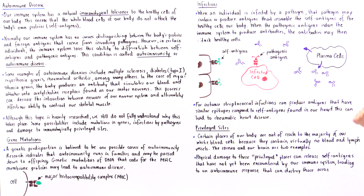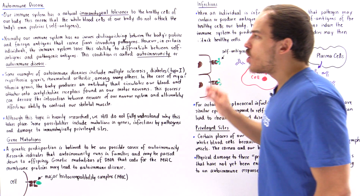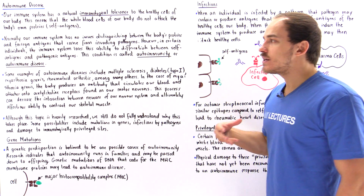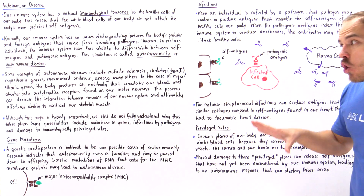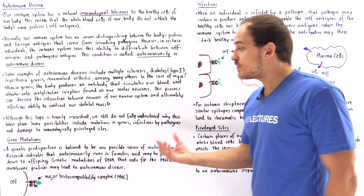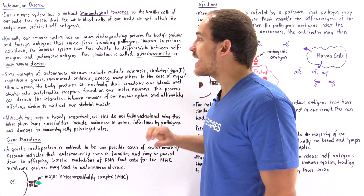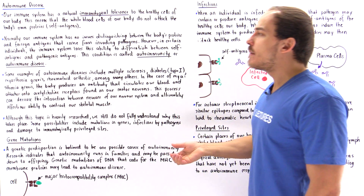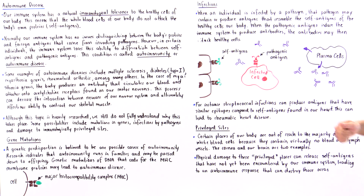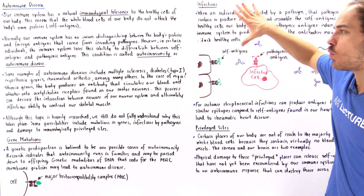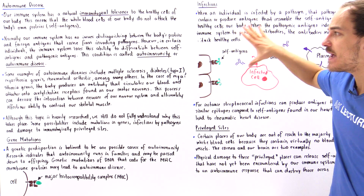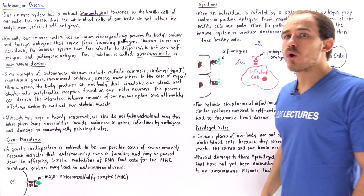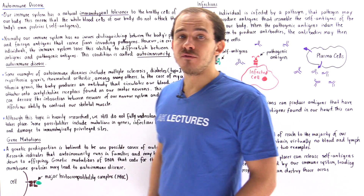These are the three different factors that can lead to autoimmune diseases: gene mutations along our DNA that code for things like the major histocompatibility complex, viral or bacterial infections that lead to cross-reactive antibodies, and damage to our immunologically privileged sites.